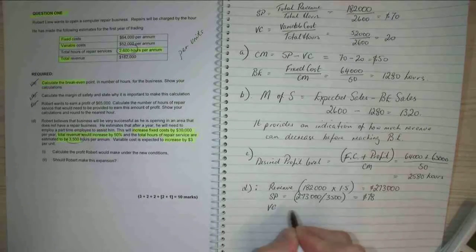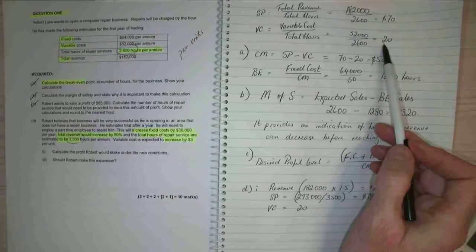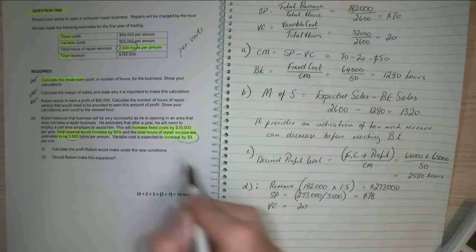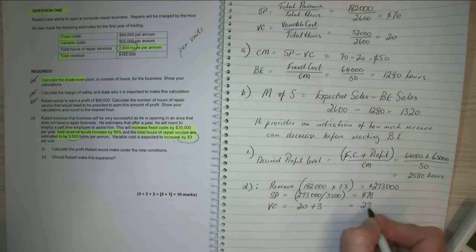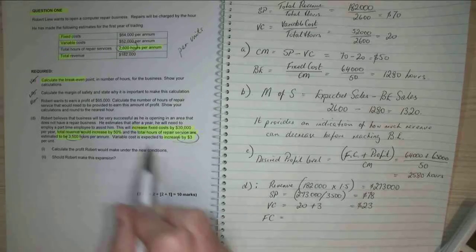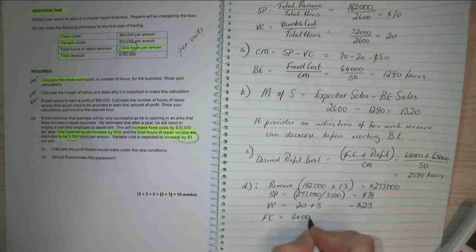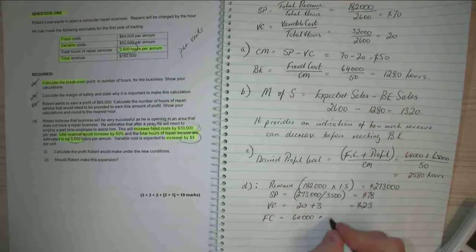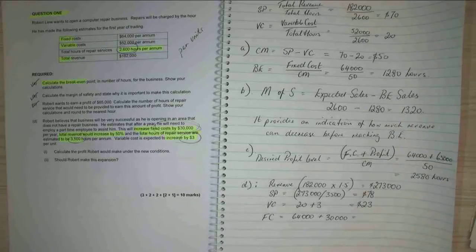My variable cost was $20 per hour. We worked that out up here. And it's going to increase by $3 per hour. And my fixed costs, they were $64,000. And we're going to add another $30,000 in. $94,000.